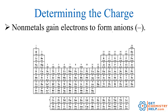Nonmetals gain electrons to form anions. The nonmetals live over here in the top right quadrant. They gain electrons, and since electrons have a negative charge, they'll become negative. For example, fluorine. Fluorine normally has nine protons, so when it's neutral it also has nine electrons. When it becomes an ion, it wants to gain as many as the nearest noble gas, neon, which has 10.